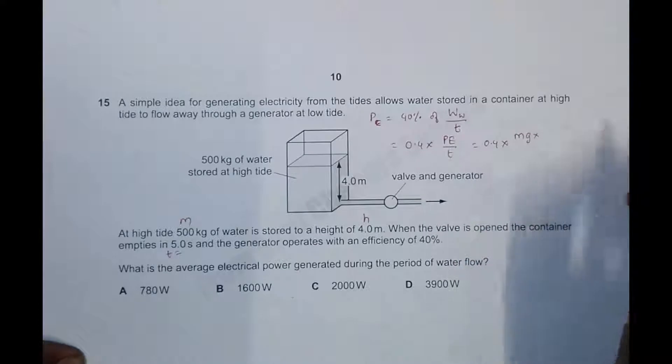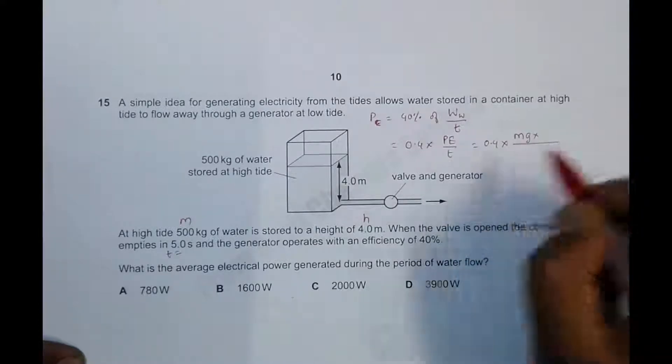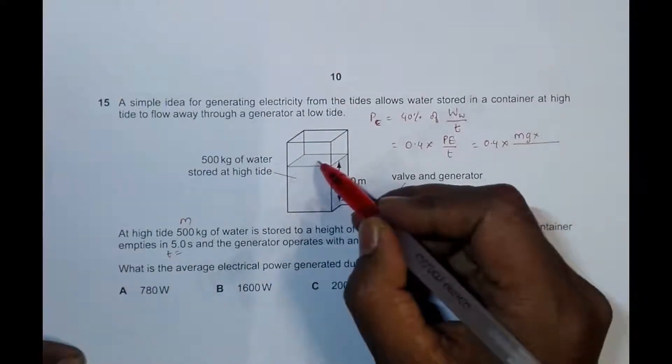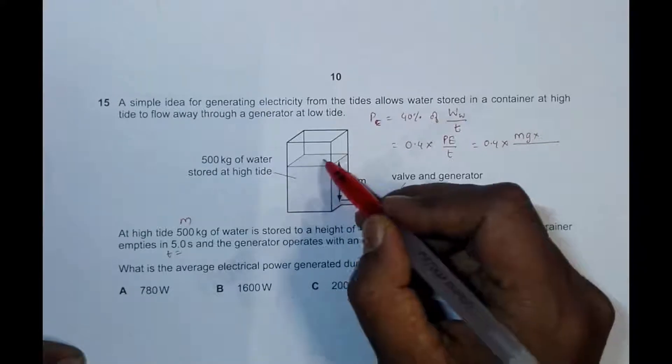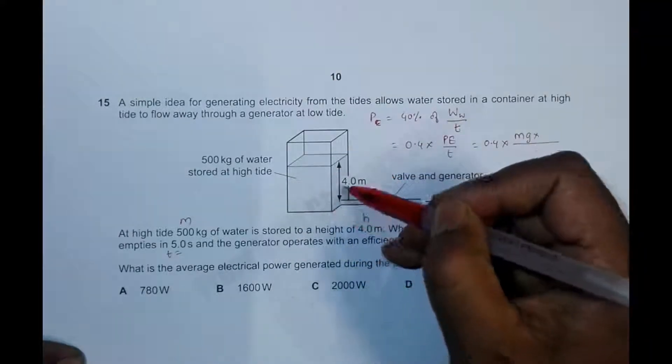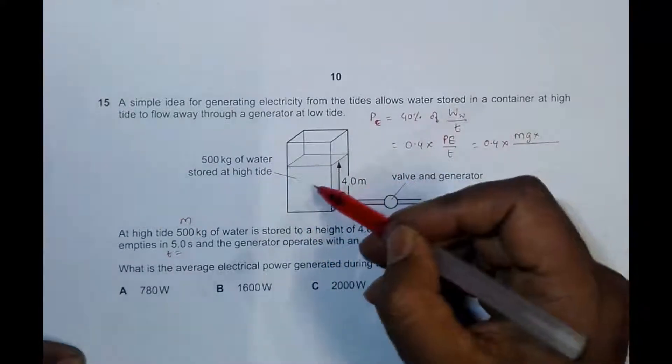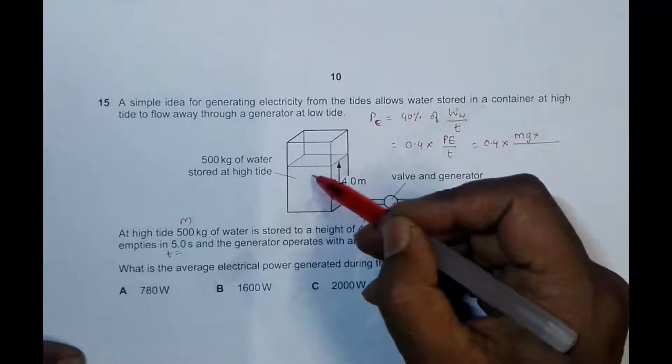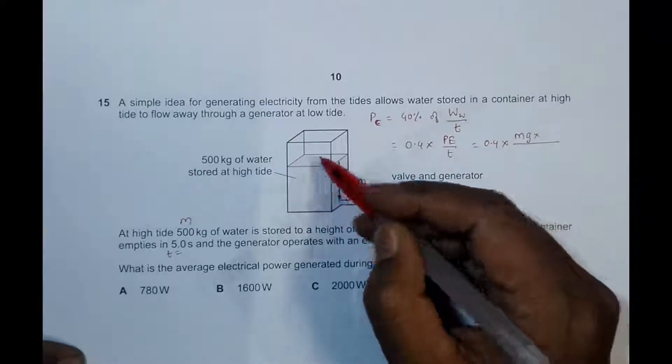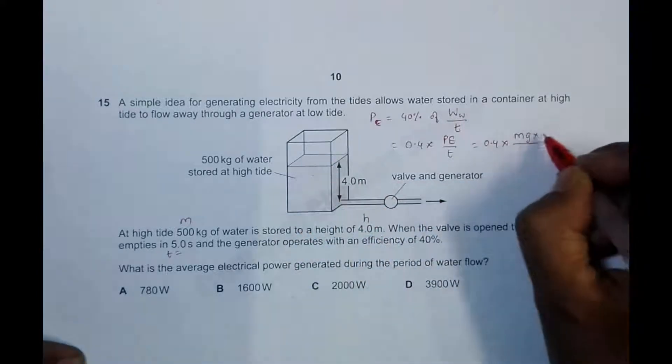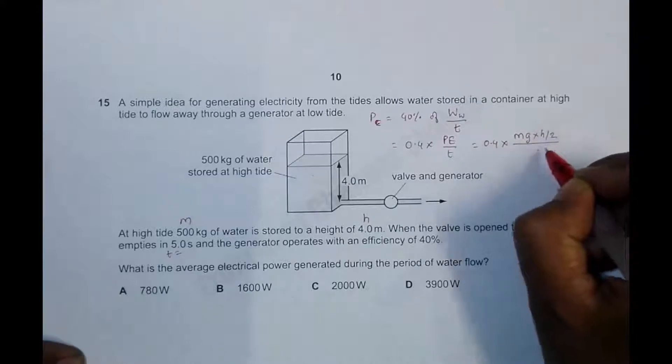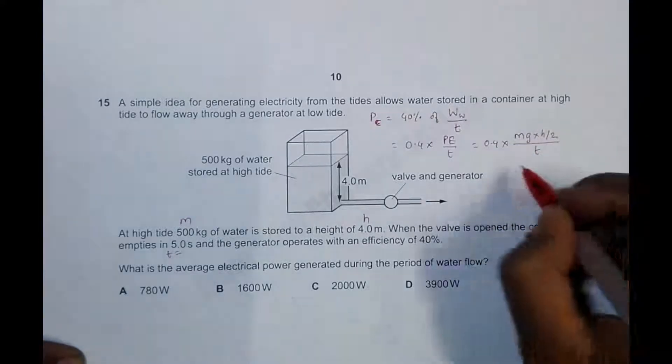Now regarding the height, the water at the surface will fall through a height of 4 meters, but the water at the bottom will fall through zero meters. In the middle it will be 2 meters. So the average height of all the water will be equal to h by 2.